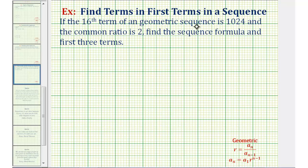If the 16th term of a geometric sequence is 1024 and the common ratio is two, we want to find the sequence formula and the first three terms.